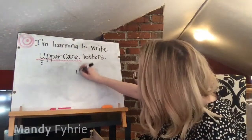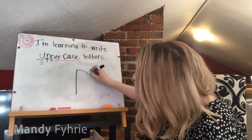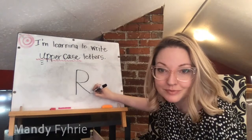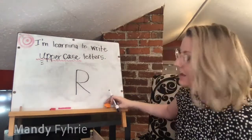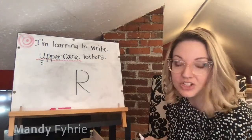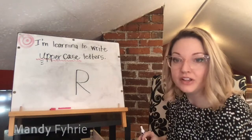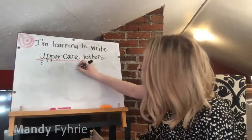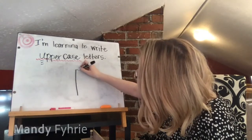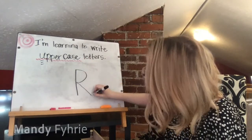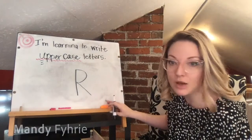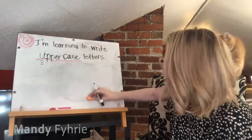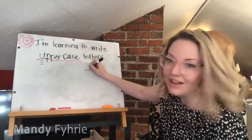Capital R is a mix between a P and a K: big line down, hop to the top, little curve in to the middle, kick out. If you're struggling with where the bump ends, put a little dot. Big line down, hop to the top, little curve in, kick out. It just takes practice.